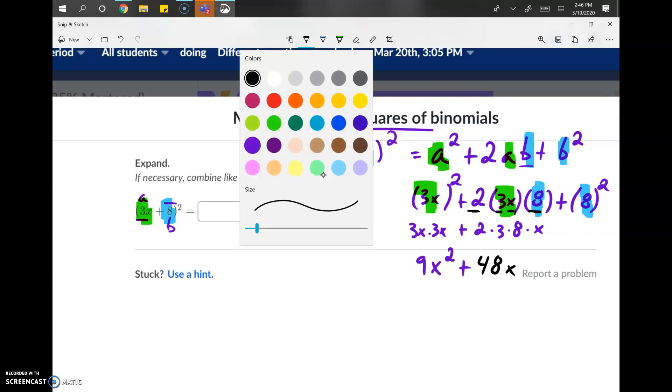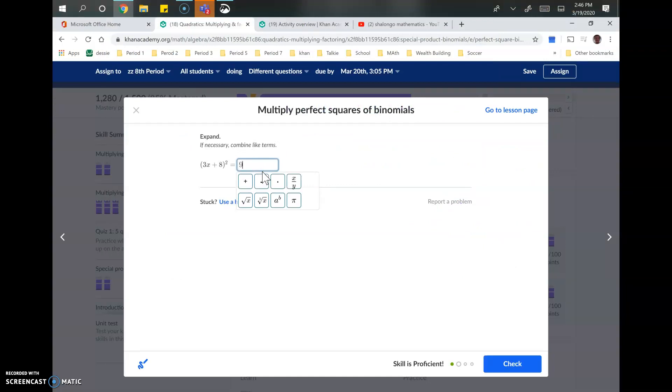And now back to the blue color. We got 8 squared, 8 times 8, we know is 64. And that is how we multiply perfect squares. So, 9x² plus 48 plus 64. 9x² plus 48x plus 64.